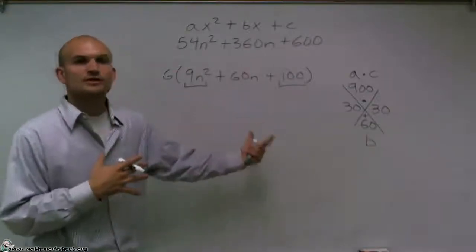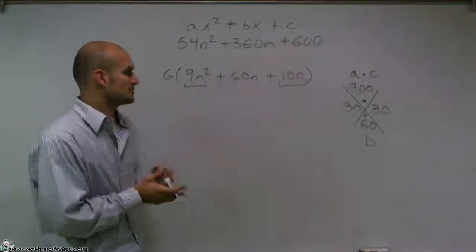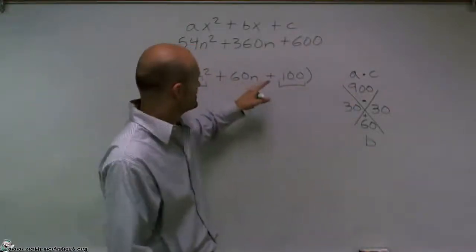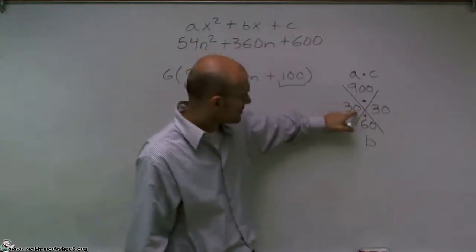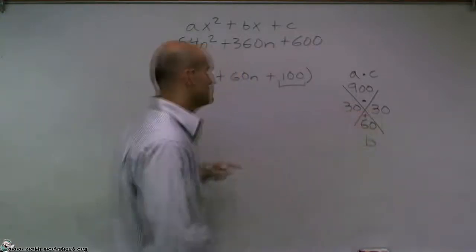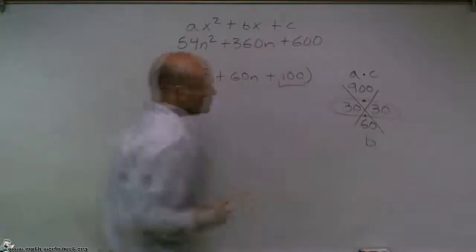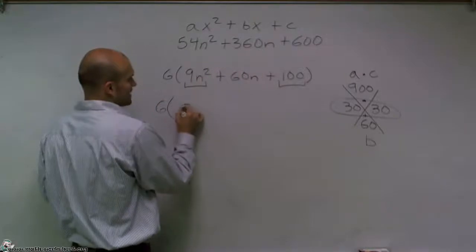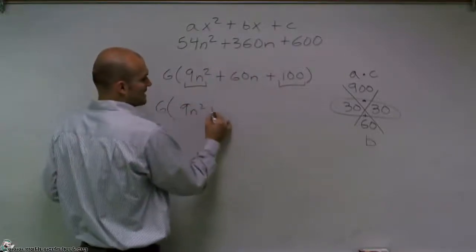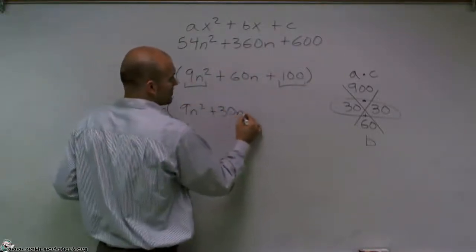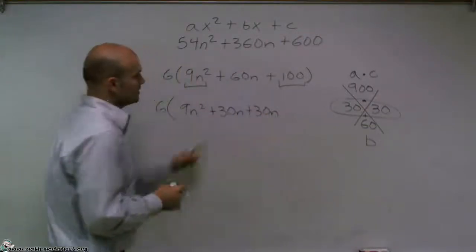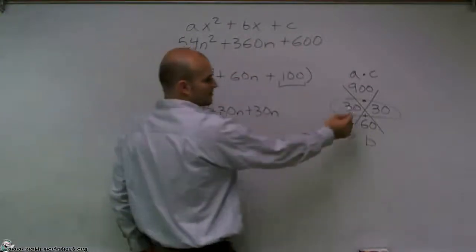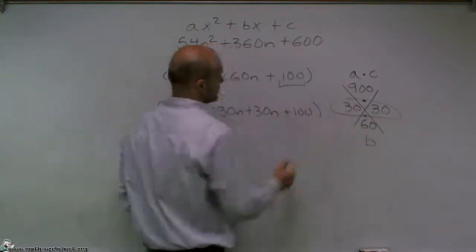But I'll show you the long way just so you guys can see so you have practice with it. So what we're going to do is, since I notice that 900 is my a times my c, 30, 30, and 60, I'm going to rewrite now my middle terms that I just figured out. So I'm going to have 6 parentheses, so I have 9n squared, rather than writing 60n, I'm going to write 30n plus 30n. 30n plus 30n would give you 60n, right? I got the 30 plus the 30 from right here, plus 100.